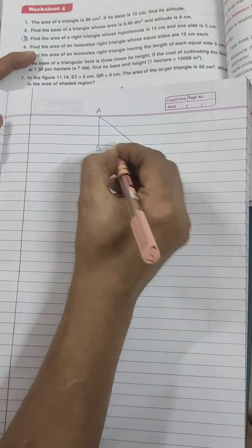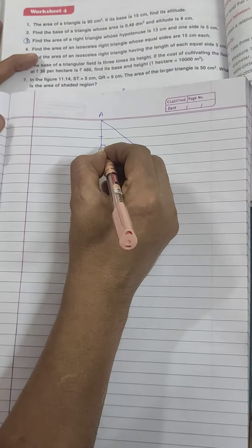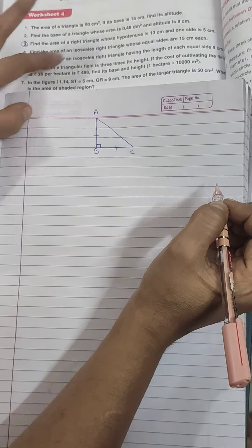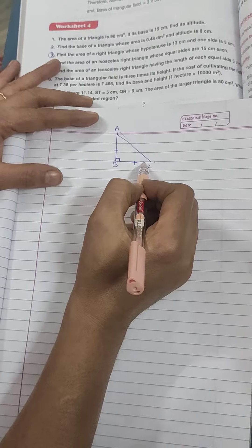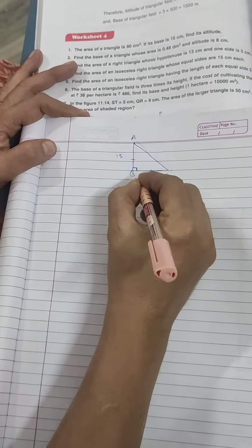This is A, B, C is your isosceles triangle. This is 90 cm. Now equal sides. Hypotenuse is a big side. They can't be equal. These two sides are equal. The equal side is 15 and 15.